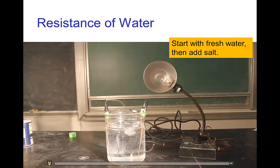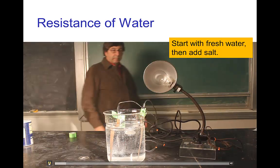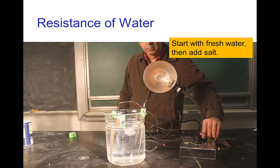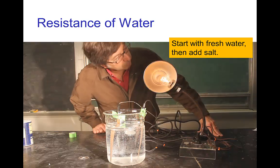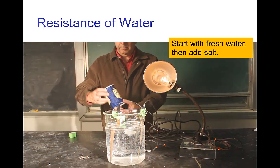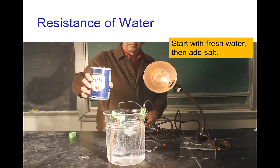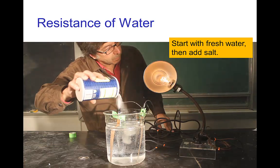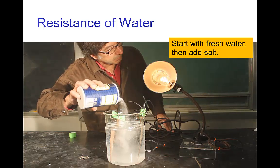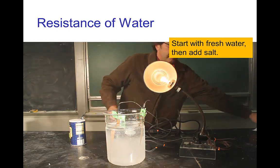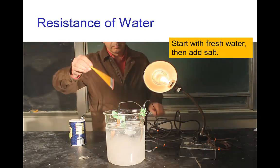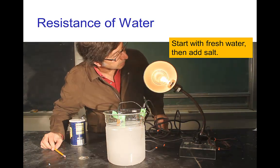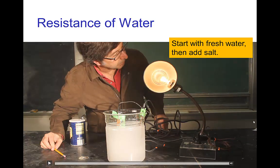The salt water has a much lower resistance than fresh water. So let's see what that looks like. We start here with a beaker of fresh water — we have a little bit of current flowing, and the lamp lights up dimly. Now I'm going to add some salt to the water and watch the lamp. See how much brighter it got, because now there's much more current passing through because the salt water has much less resistance.